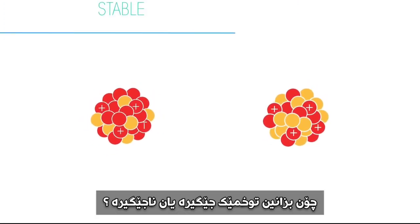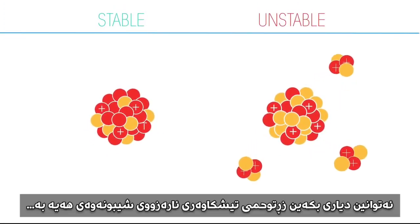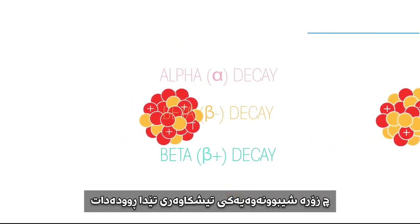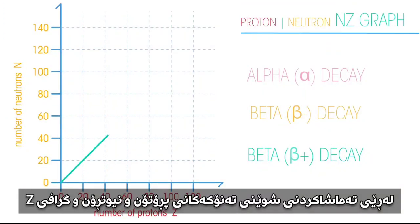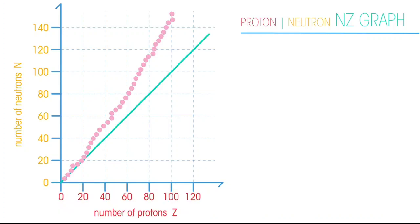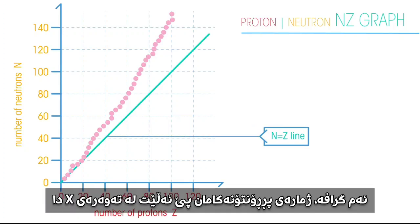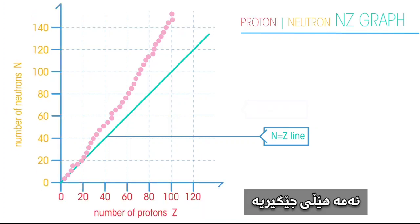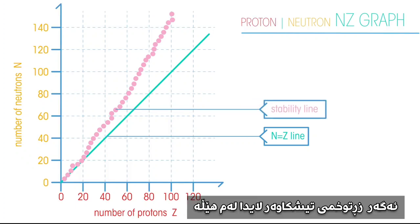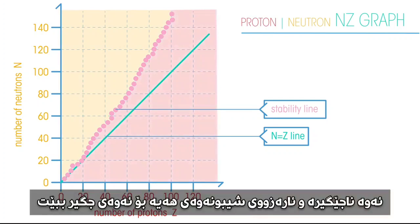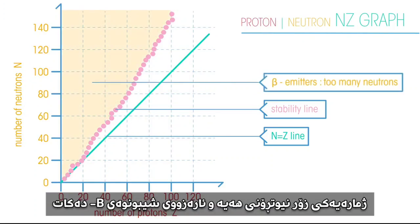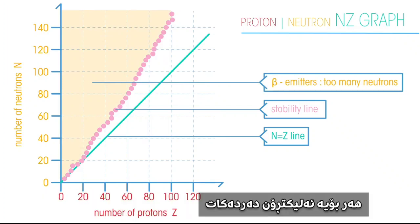So how do we know if an atom is stable or unstable? We can determine whether a radioisotope is likely to decay and what type of decay is likely to occur by looking at its position on a proton-neutron NZ graph. This graph shows the number of protons on the x-axis and the number of neutrons on the y-axis. This is a stability line. If a radioisotope lies left or right of this line it is unstable and likely to decay to become stable. A radioisotope that lies to the left of the stability line has too many neutrons and is likely to undergo beta minus decay, giving off electrons.